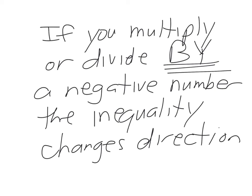Go ahead and repeat this with me: if you multiply or divide by a negative number, the inequality changes direction. Say it again on the count of three — one, two, three. If you multiply or divide by a negative number, the inequality changes direction.